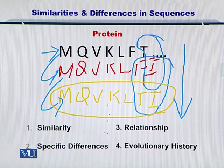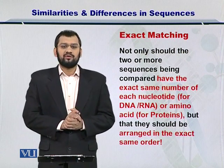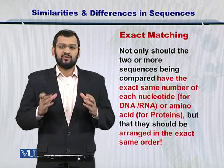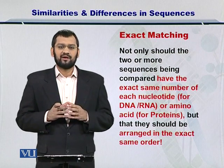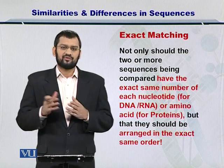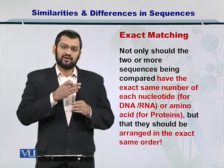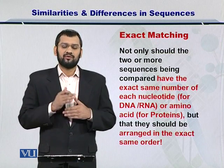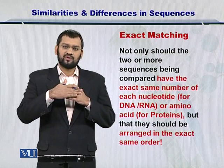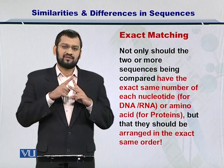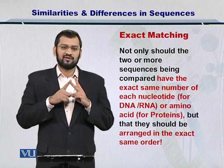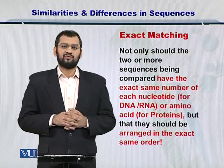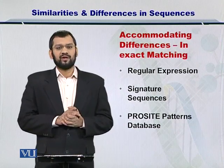In this way you can also look at the evolutionary history. Now I would like to introduce exact matching. The idea is that two sequences are not only similar in terms of their amino acids or nucleotides in case of DNA and RNA, but that the order in which they appear in the sequence is exactly the same. As mentioned in the previous example, for exact matching by placing two sequences against each other, they should have the exact same amino acids or nucleotides and exist in the same order. However, there can be cases when this is not going to happen, and in that case you will need to accommodate the differences.